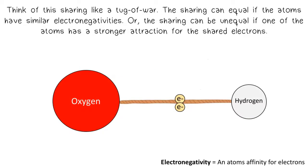Think of this sharing like a tug-of-war. The sharing can be equal if the atoms have similar electronegativities, or the sharing can be unequal if one of the atoms has a stronger attraction for the shared electrons.